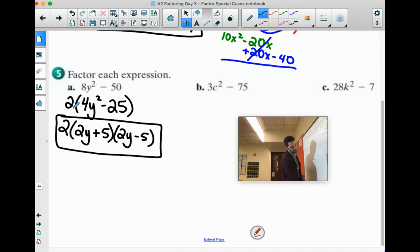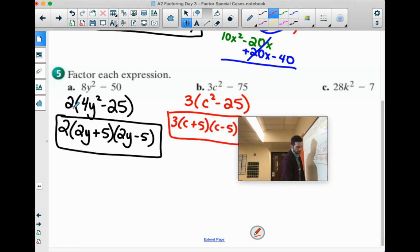3c squared minus 75. They have 3 in common. 3 times c squared is 3c squared. 3 times 25 is 75. Hey, those are two things we could square root. Square root of c squared, square root of 25 is 5. And let me move my face out of the way here.